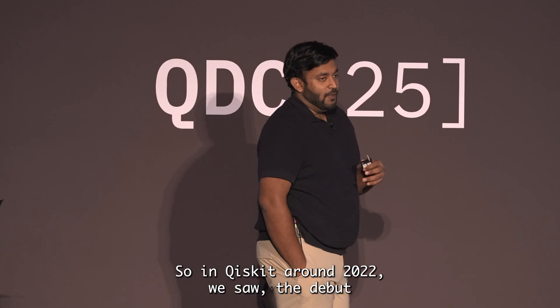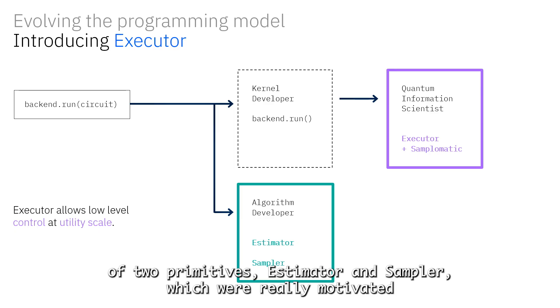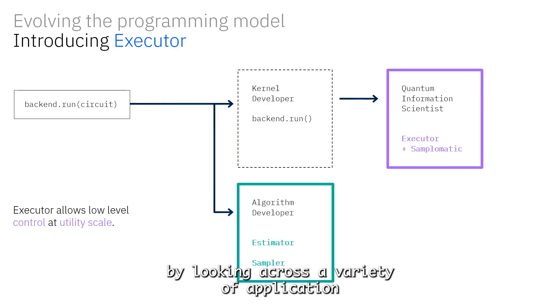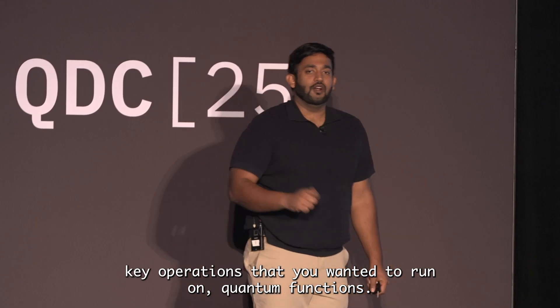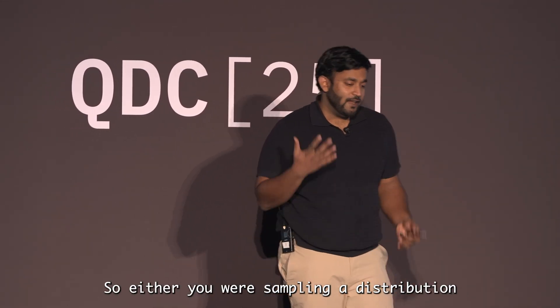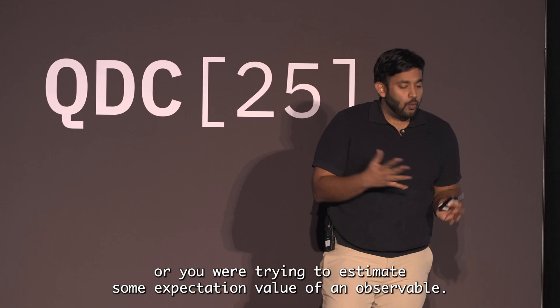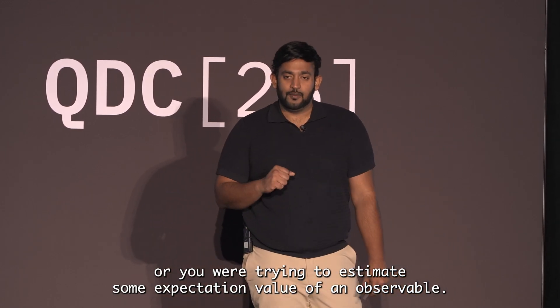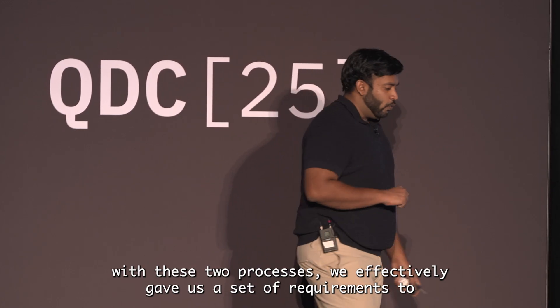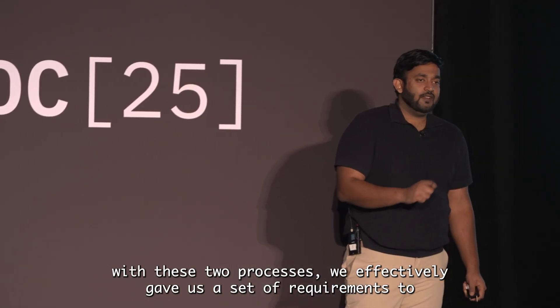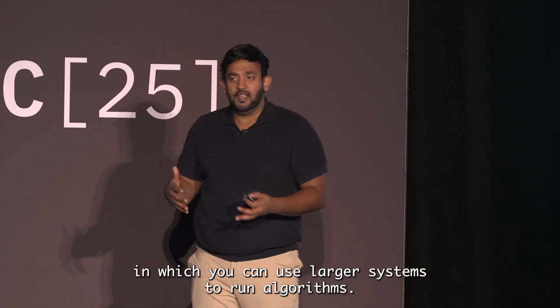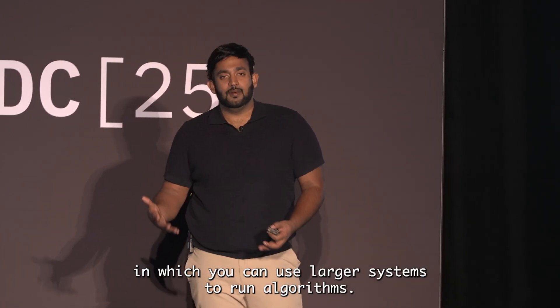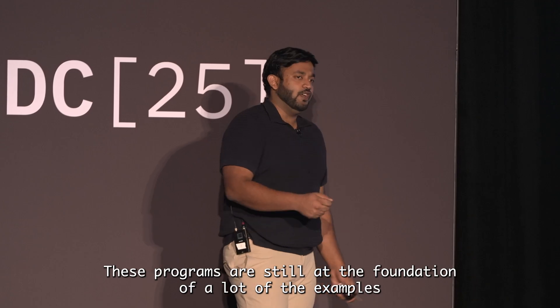To capture some of the interfaces that Qiskit had defined, we started to build a new execution model. In Qiskit around 2022, we saw the debut of two primitives: estimator and sampler, which were motivated by looking across a variety of application libraries and looking at key operations—either sampling a distribution or estimating some expectation value of an observable.